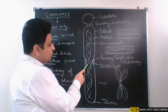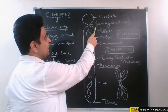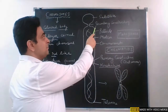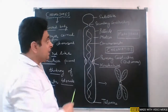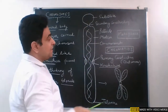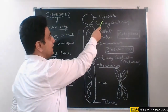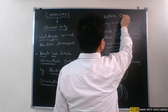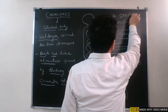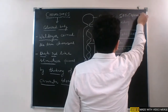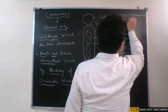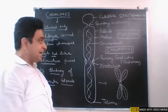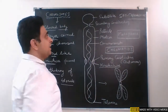Besides the primary constriction, in some chromosomes there may be another constriction called the secondary constriction. The structure beyond the secondary constriction is called a satellite, and such chromosomes are called SAT chromosomes. SAT chromosomes are the only ones where you will find secondary constrictions.